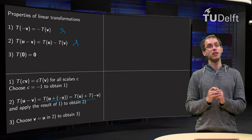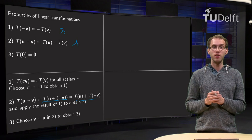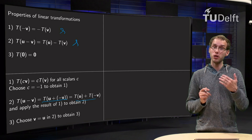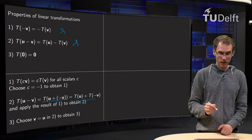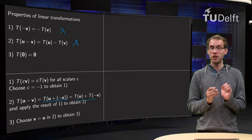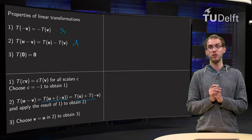T of u minus v equals T of u minus T of v. And property three you can see in a number of ways, but one option is to use v equals u and property two. You get T of u minus u equals T of zero equals T of u minus T of u equals zero, so T of zero equals zero.